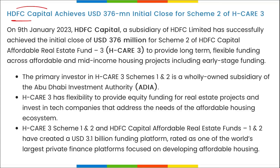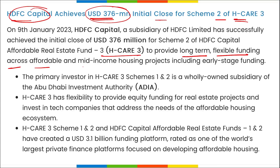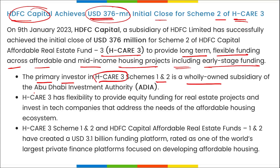HDFC Capital — a subsidiary of HDFC Limited — has successfully achieved an initial close of 376 million dollars for Scheme Two of HDFC Capital Affordable Real Estate Fund Three (HCare 3), to provide long-term flexible funding for affordable and mid-income housing projects, including early-stage funding. The primary investor in HCare 3 Schemes 1 and 2 is a wholly-owned subsidiary of the Abu Dhabi Investment Authority (ADIA). HCare 3 also has flexibility to invest in tech companies addressing the affordable housing ecosystem.